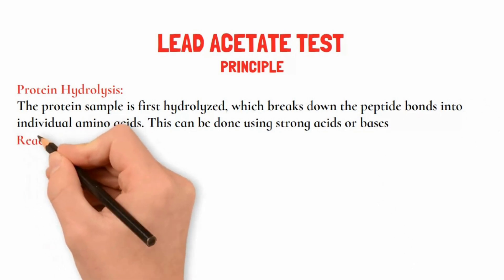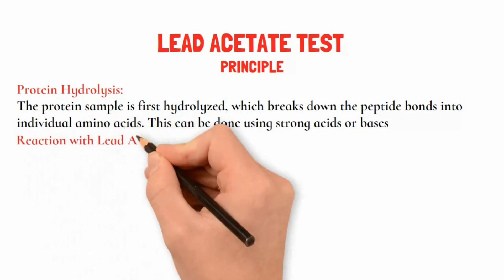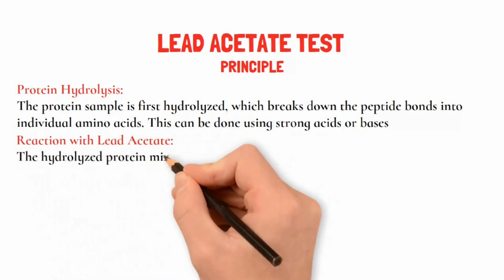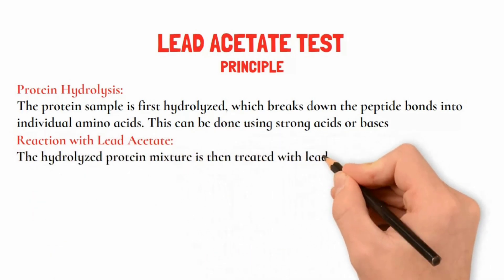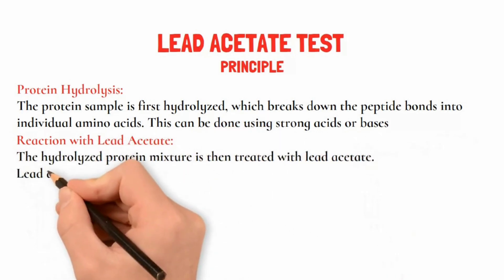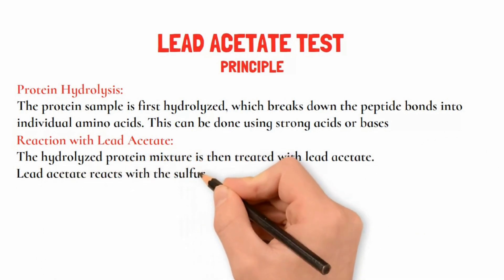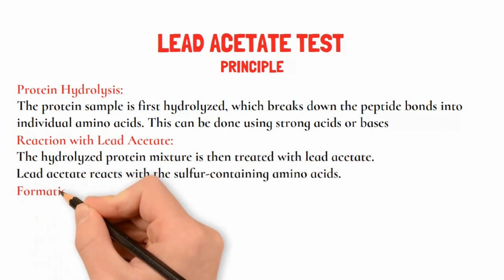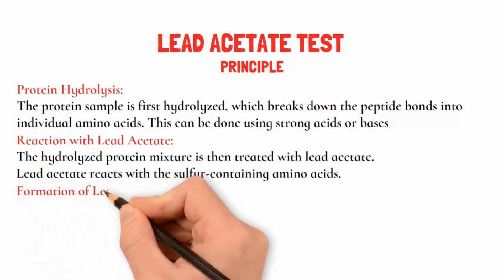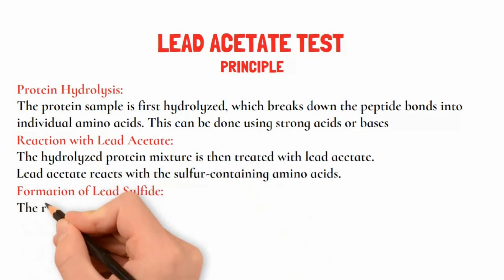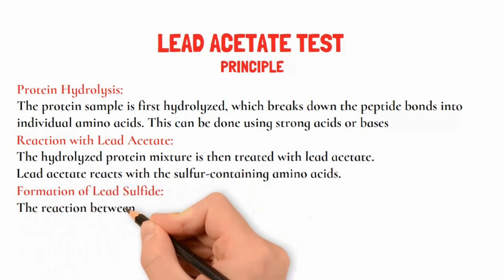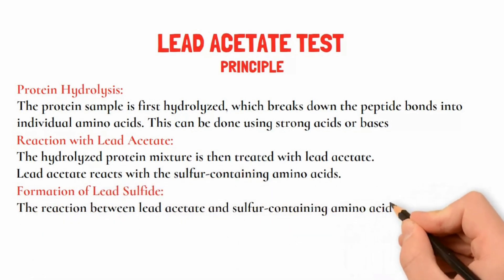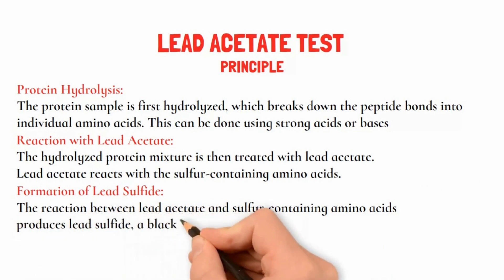Next is the reaction with lead acetate. The hydrolyzed protein mixture is then treated with lead acetate. Lead acetate reacts with the sulfur-containing amino acids, resulting in the formation of lead sulfide — a black precipitate.